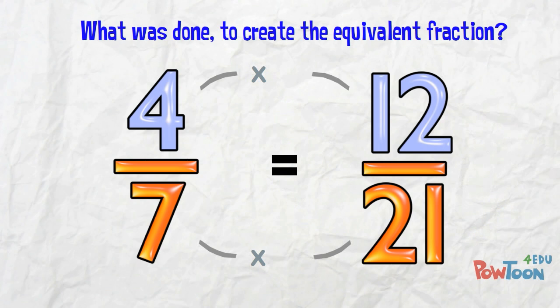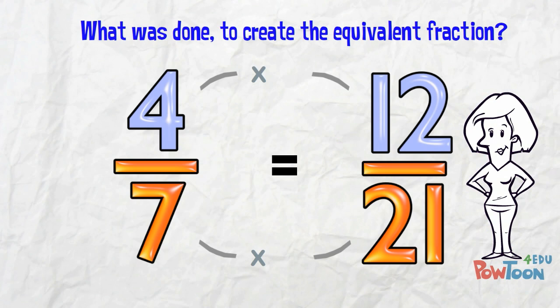So we look at the original. Let's take the numerator, and I say to myself, 4 times what number gives me 12? If you have to, run through the 4 times table till you get to the answer of 12.